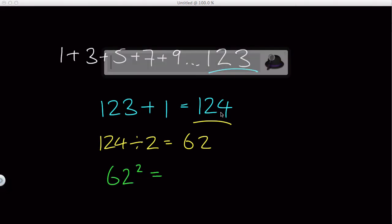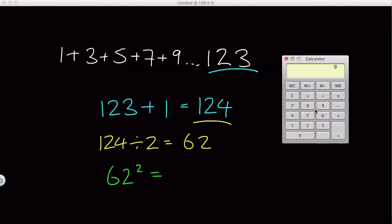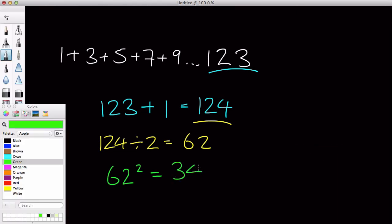Now, the third thing we are going to do is actually square that 62. Now, I have no idea what that is either, so I am going to use my calculator to say 62 times 62 equals 3844. And, surprise, surprise, that is the answer to this question.